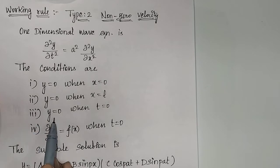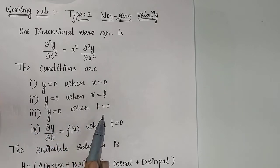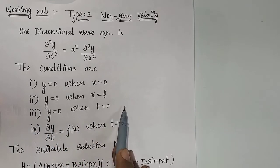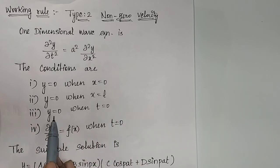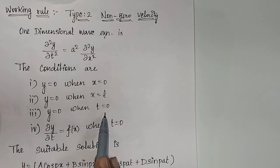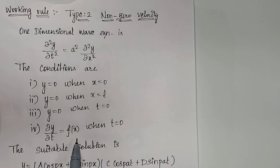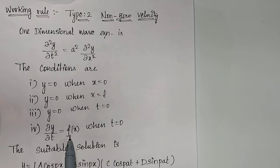The third condition changes here: y = 0 when t = 0. In the zero velocity model, you would have ∂y/∂t = 0. Here, we changed it to y = 0 at t = 0. The fourth condition: ∂y/∂t = f(x) when t = 0. What is this f(x)? It depends upon your problem — you have to specify it.